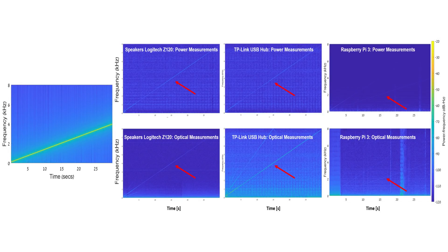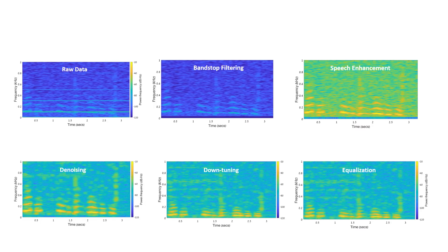We used speakers to play an audio file that consists of a chirp function, which is a frequency scan between 0 to 4 kHz. We measured the power consumption of various devices and obtained optical measurements from their power indicator LEDs. Our experiments showed that many products of various manufacturers are vulnerable to the Glowworm Attack. In order to isolate the audio signal from the raw optical signal obtained from the electro-optical sensor, we developed an optical acoustic transformation.